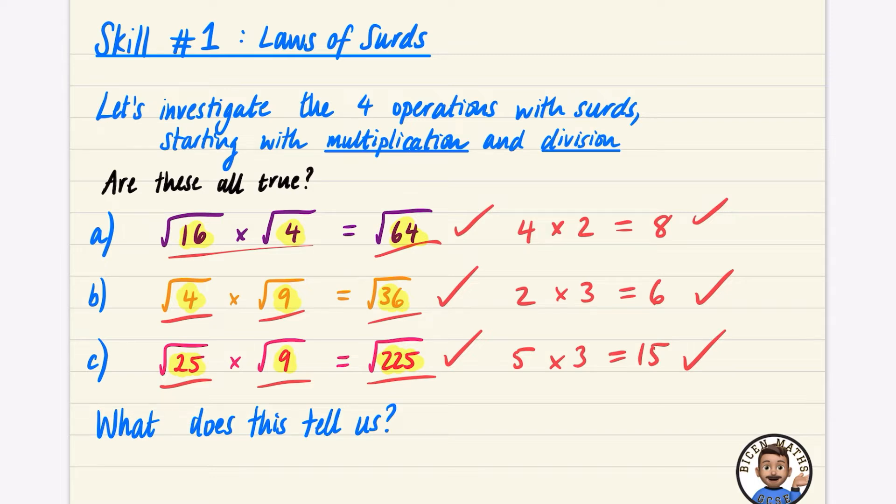So what does this tell us? This tells us that if you have the square root of one number, and you multiply it by the square root of another number, it's the same thing as the square root of these two numbers being multiplied together.